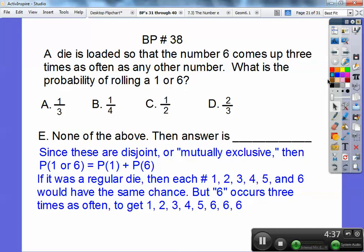So we've just got to figure out what's the probability of 1, what's the probability of rolling a 6, and add them together. Since 6 is three times as likely, I listed the 1 once, the 2 once, the 3 once, the 4 once, the 5 once, and the 6 three times because it's three times as likely. So there's eight numbers. So the probability of rolling a 1 is 1 eighth. The probability of rolling a 6 is 3 eighths. So the probability of rolling a 1 or a 6 would be adding those together. So 1 eighth plus 3 eighths is 4 eighths or 1 half. So it's choice C, 1 half.